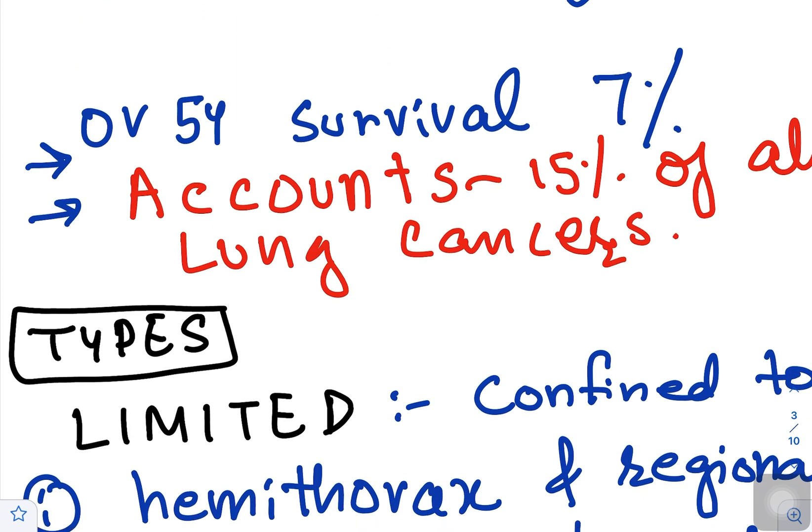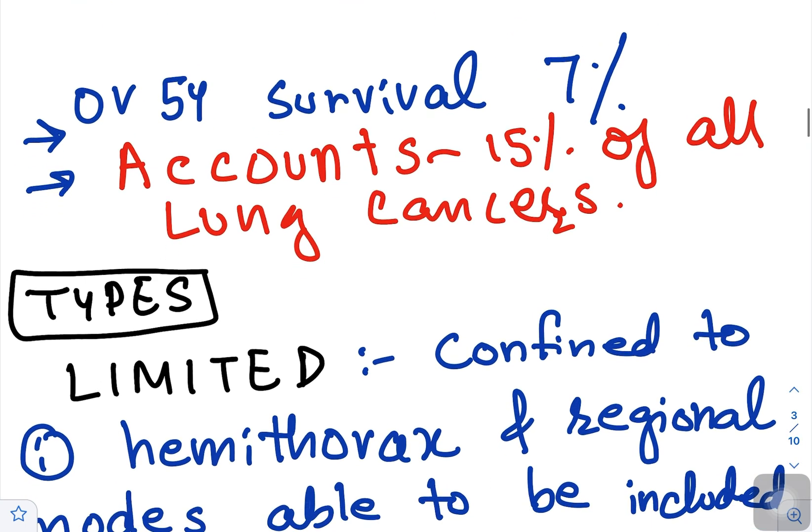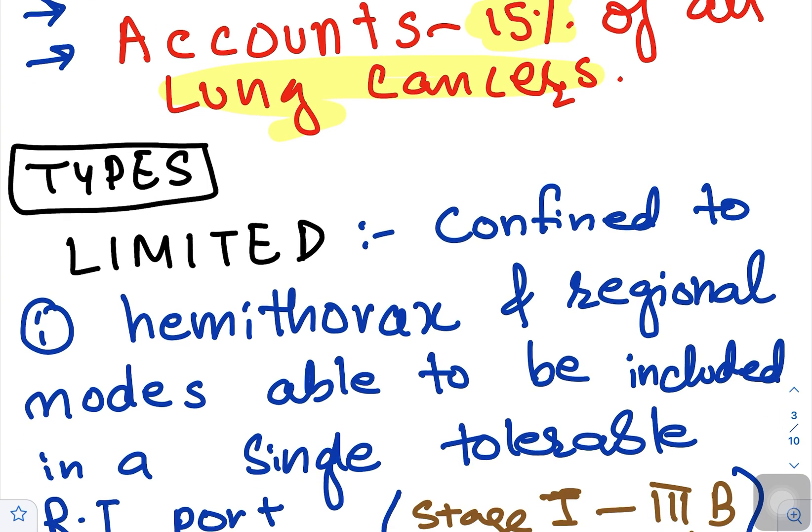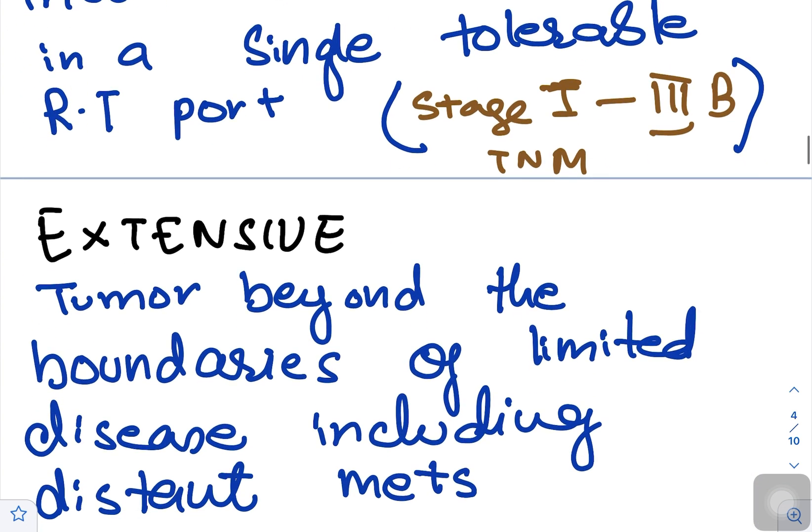Epidemiology: the overall survival is about 7 percent in small cell lung cancer. It accounts for around 15 percent of all lung cancers. It has two types: limited and extensive.